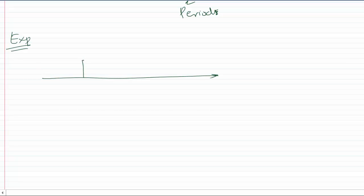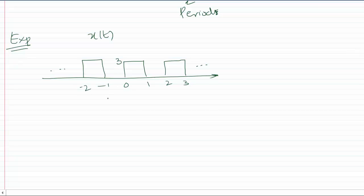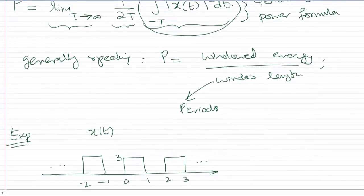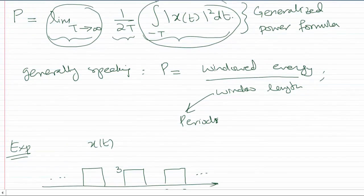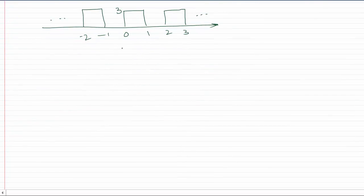Let me use an example to further explain this concept. Let's say we have a signal x(t) which is periodic, and we have to find its power. This is a periodic signal with height equal to three. If asked to find its power, one way is to use the generalized formula where we take the window as large as possible. But the moment we realize the signal is periodic, we can instead take the window length equal to one period. The period of this signal is two seconds, so capital T equals two.